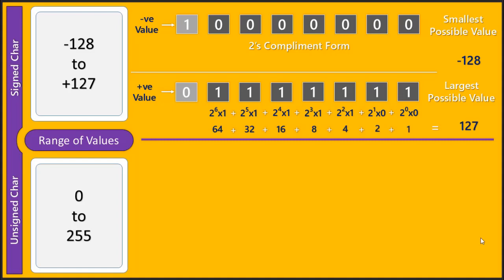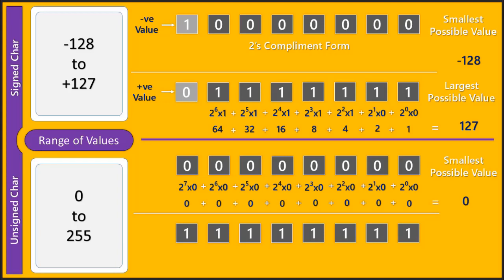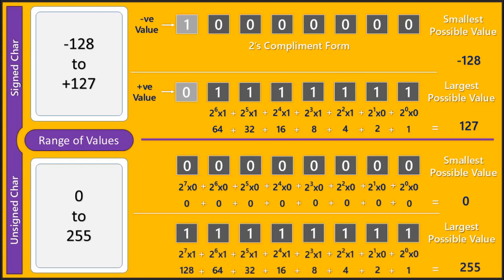This is how the range of signed char — that is -128 to 127 — is calculated. For unsigned char, all 8 bits are used as data bits. To calculate the smallest possible value, set all bits to 0, which gives 0. To calculate the largest possible value, set all bits to 1, which gives 255. This is how the range of unsigned char — 0 to 255 — is calculated.